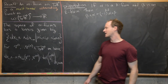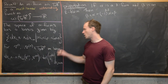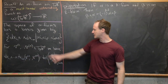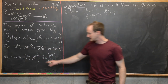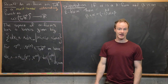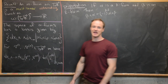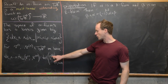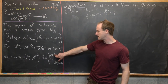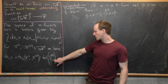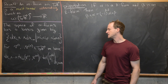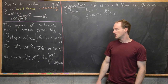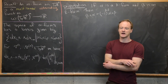To recall what the elementary forms do: if we have m vectors v¹ up to vᵐ in ℝⁿ, then dxᵢ₁ ∧ ··· ∧ dxᵢₘ evaluated at these m vectors is the determinant of a matrix whose rows are given by the input vectors and whose columns are indexed by i₁ through iₘ. We did examples of this in a previous video.